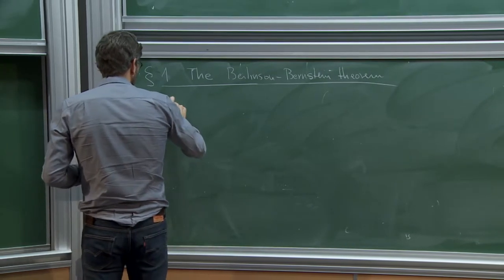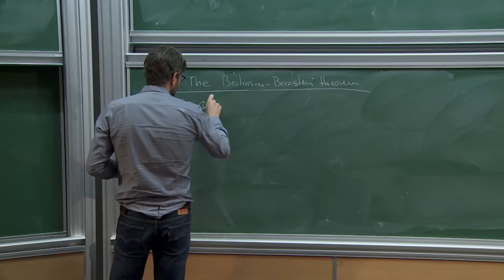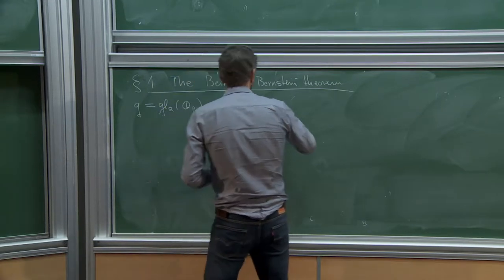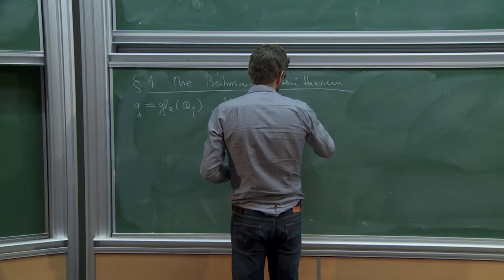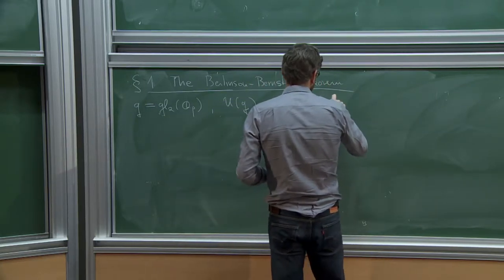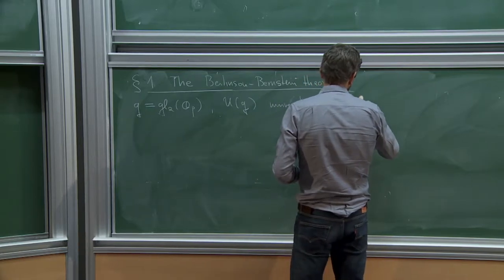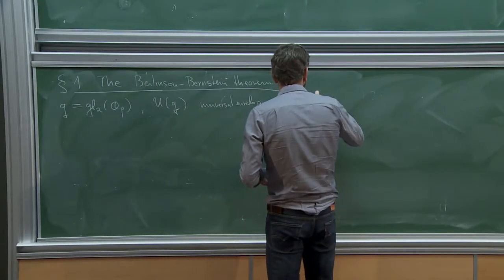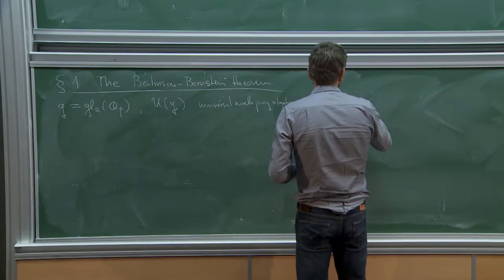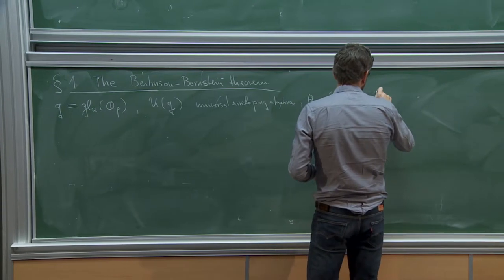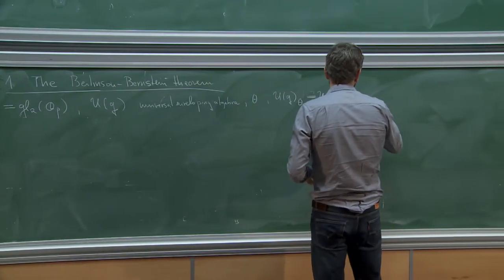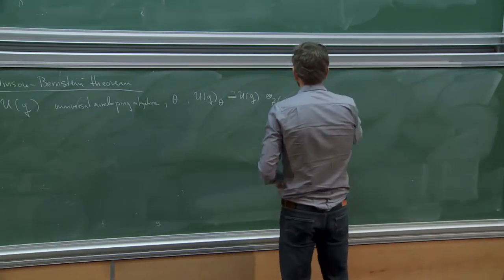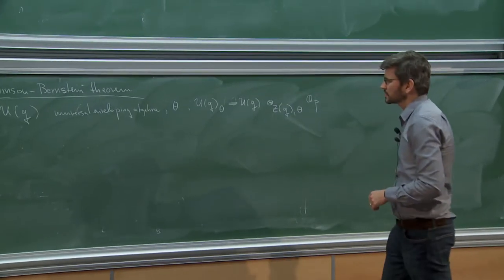So G is the Lie algebra of GL2 over Q_p. UG is the universal enveloping algebra. This comes with an augmentation — the augmentation character I call theta — and then I can form a central reduction. I form UG_theta, which is simply UG tensored over the center relative to the restriction of theta to the center of UG, numbers Q_p. So this is an algebra on the one hand.